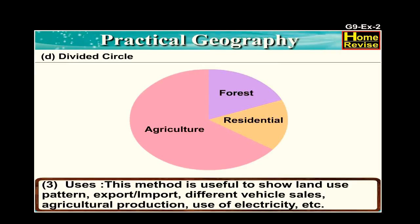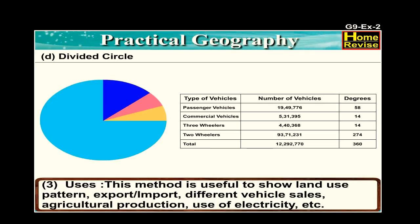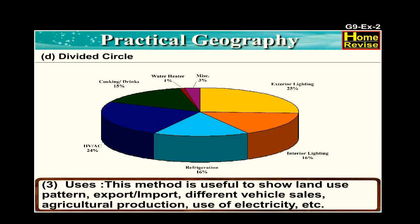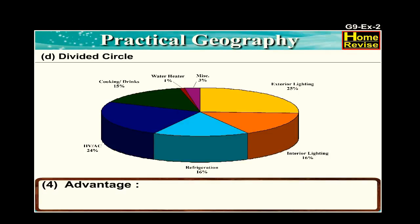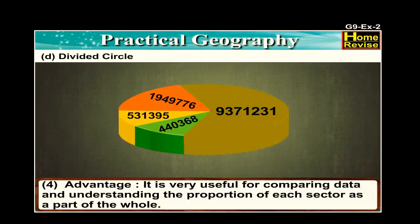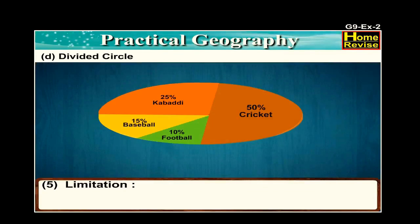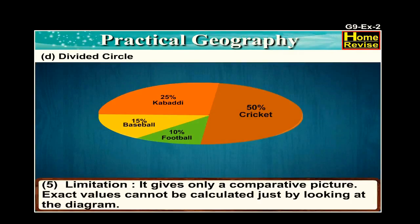Uses: this method is useful to show land use patterns, export and import data, different vehicle sales, agricultural production, use of electricity, etc. Advantage: it is very useful for comparing data and understanding the proportion of each sector as a part of the whole, and gives a very good visual impact. Limitation: it gives only a comparative picture; exact values cannot be calculated just by looking at the diagram.